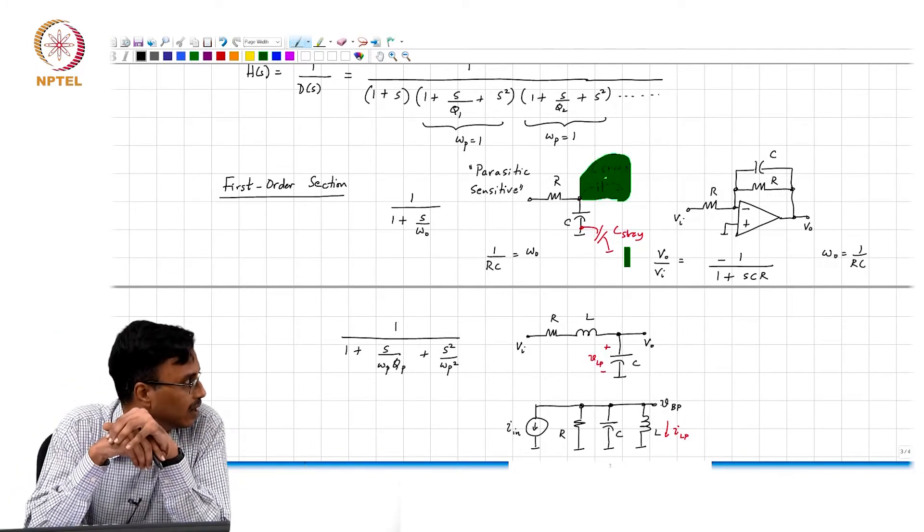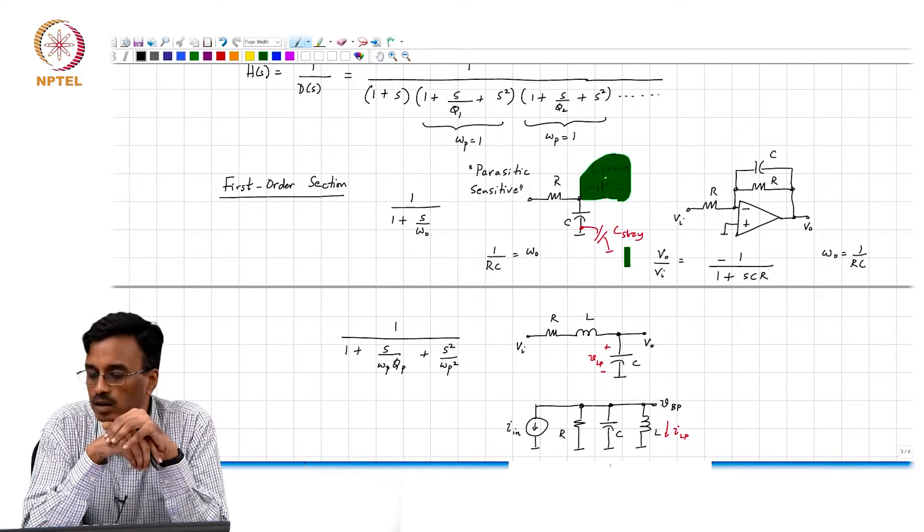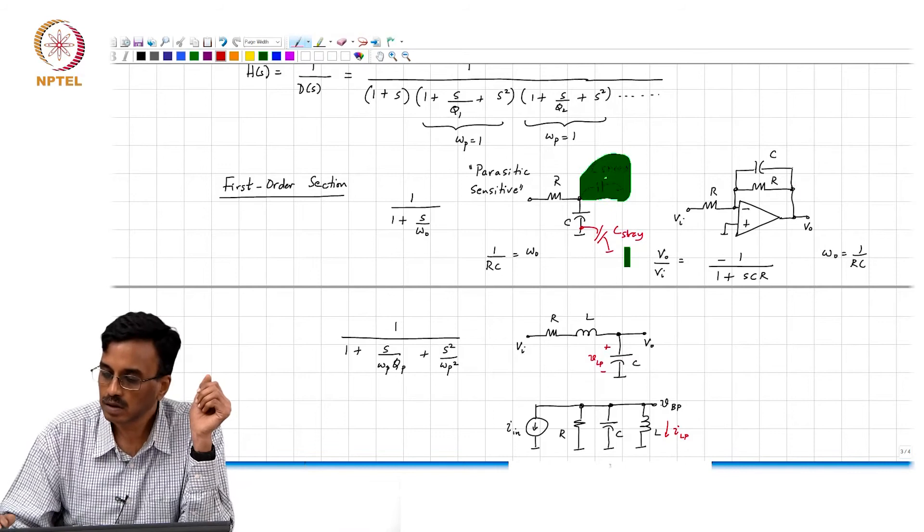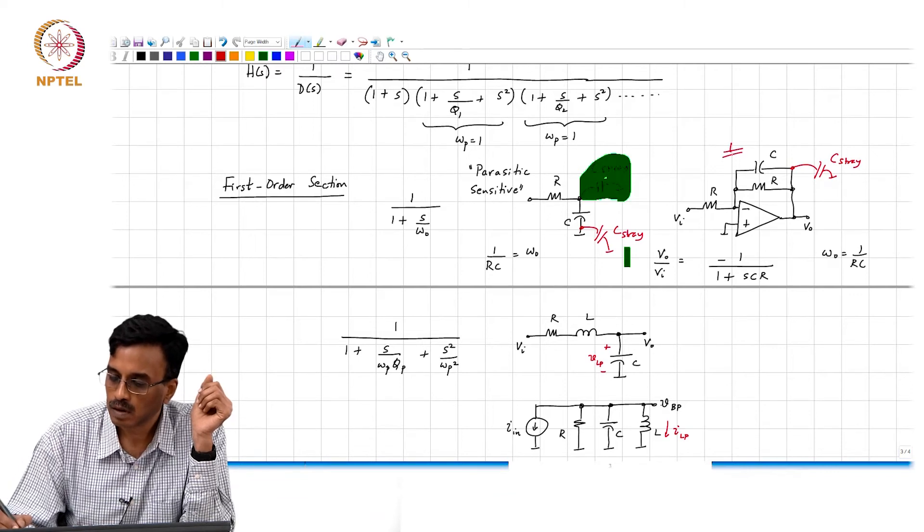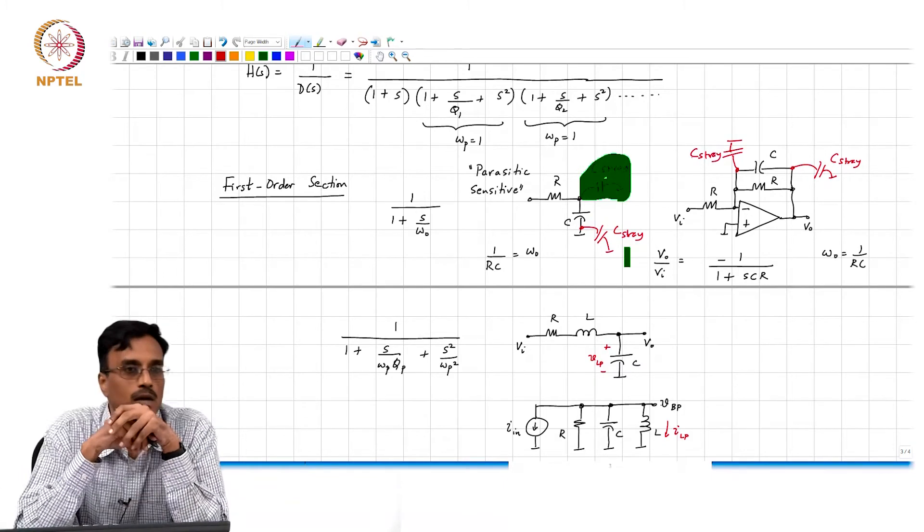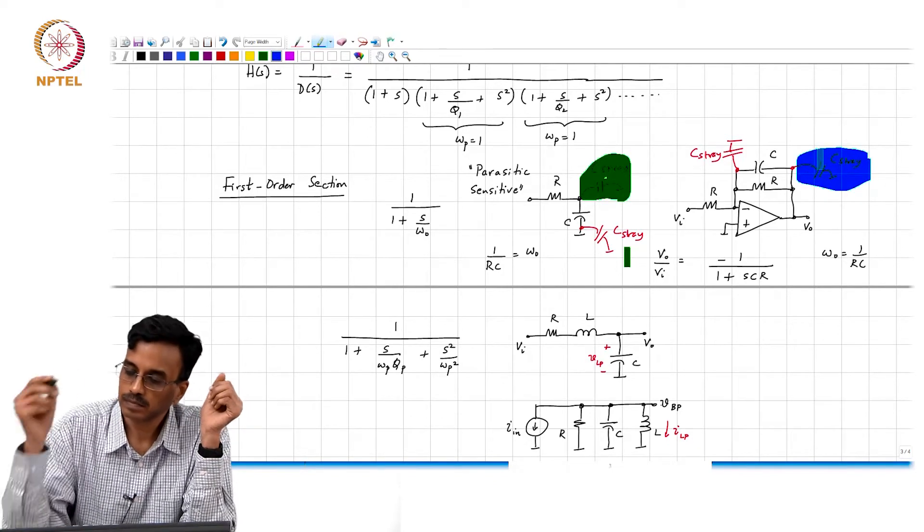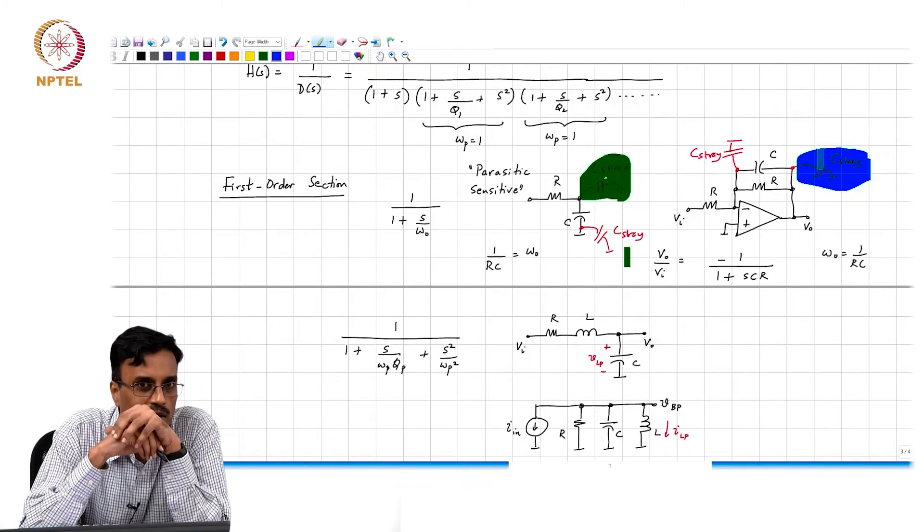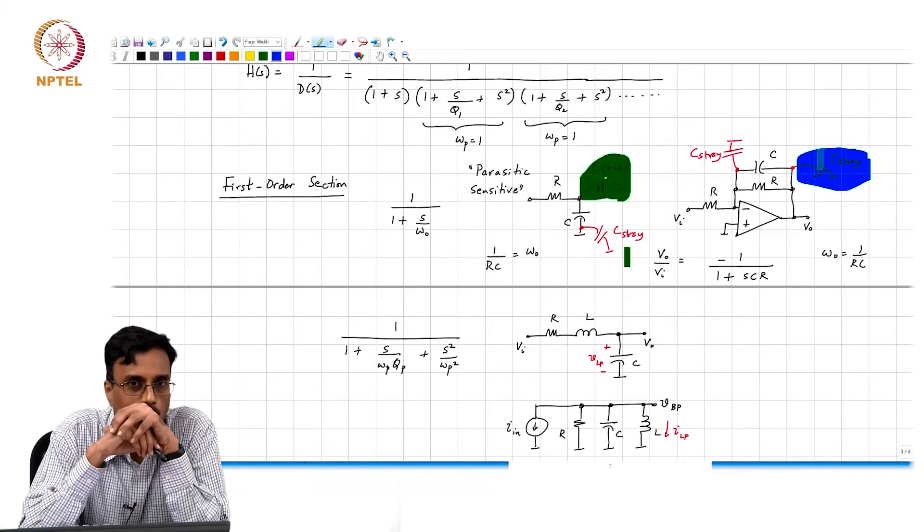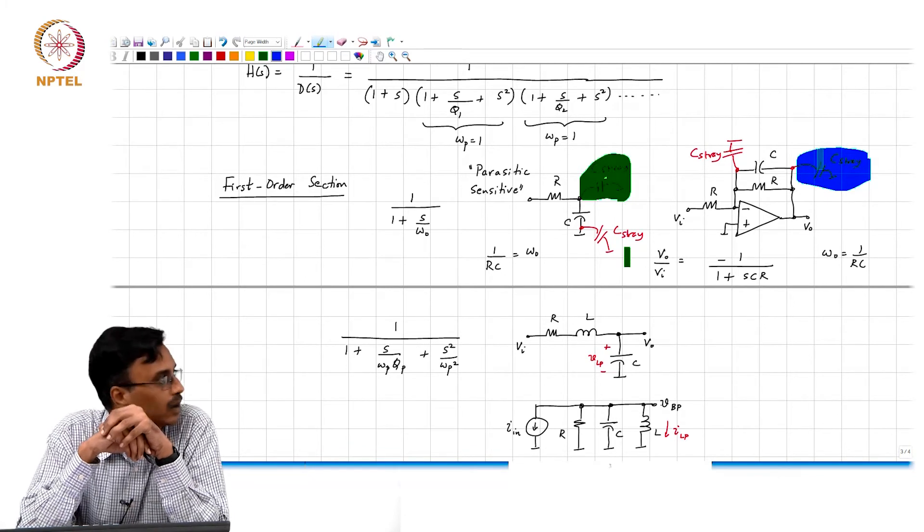Now, let us see what happens with stray capacitances in this structure. This is C_stray, this is C_stray. What comment can we make about the effect of this stray capacitance? The op amp is ideal. What comment can we make about the effect of the stray capacitance there on the transfer function?